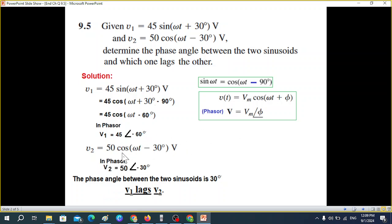From here we just write the magnitude and the angle. So V1 = 45∠-60° and V2 = 50∠-30°. This is phasor form and now we can plot the phasor easily. So we take this plot graph.